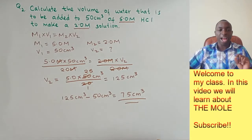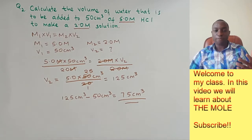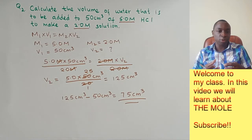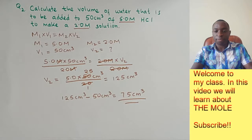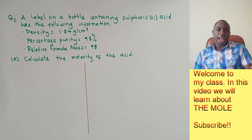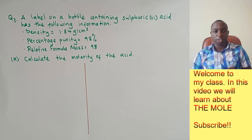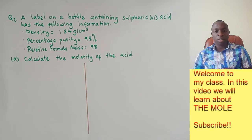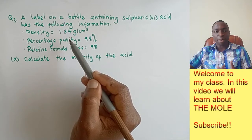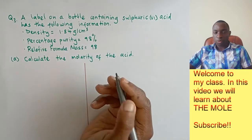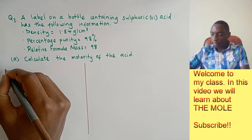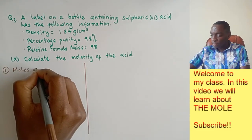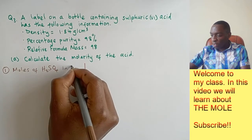Now let's look at a third example that has an application part. A label on a bottle of sulfuric acid shows: density = 1.84 g/cm³, percentage purity = 98%, and relative formula mass = 98. We need to calculate the molarity of the acid. Step one is to calculate the number of moles of sulfuric acid in 1 cm³.